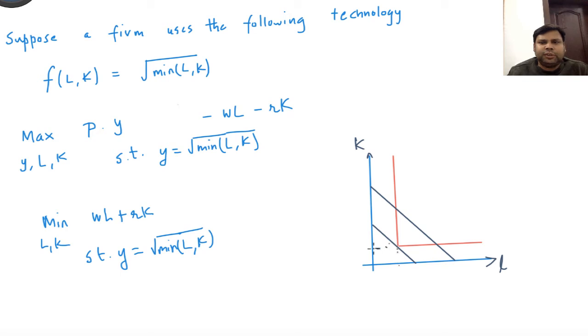So what is this point? This is the iso-quant corresponding to Y level of output, so L must be Y square and K must be Y square. These are also known as conditional input demand functions. So conditional input demand function is L equals Y square, K equals Y square.